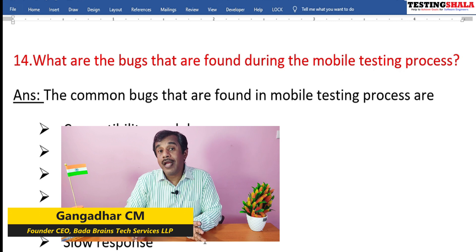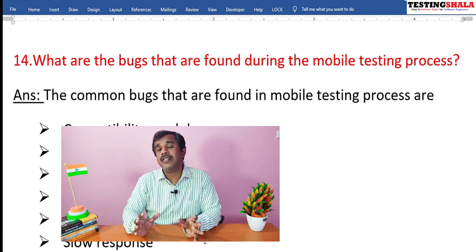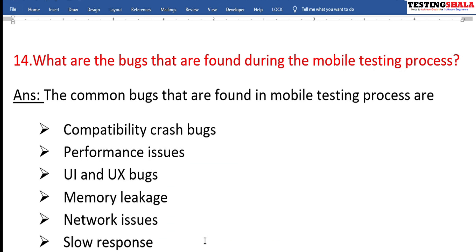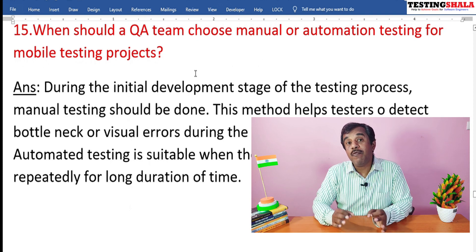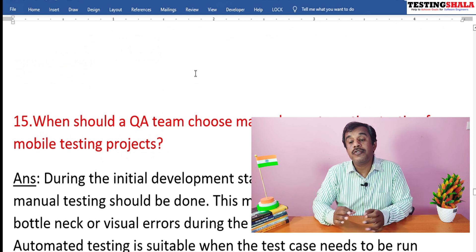What kinds of bugs do you find while testing mobile apps? There are various kinds of bugs: compatibility bugs, crash bugs, performance issues, UI and UX bugs, memory leakage bugs, networking issues, slow response, and other functional defects.